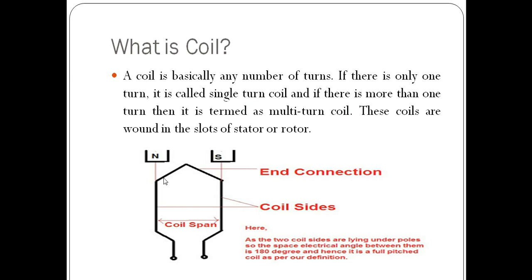Here you can see this is a coil having a single turn. You can see this coil is having two coil sides — this is one coil side and this is another coil side. These two coil sides are lying under the poles of the machine: this coil side is lying under the north pole and this coil side is lying under the south pole.